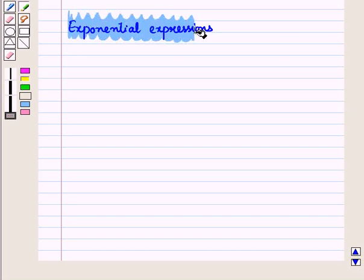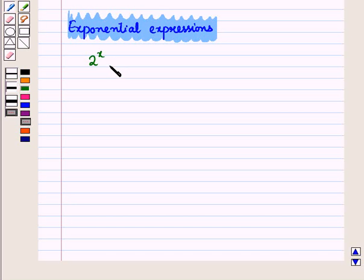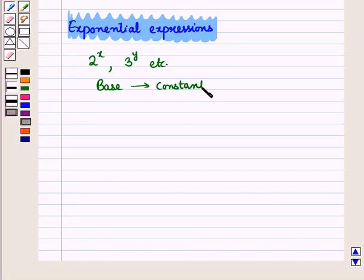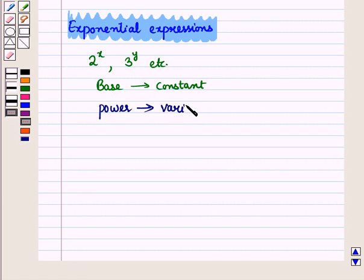Now I will introduce exponential expressions. Expressions of the form 2 raised to power x, 3 raised to power y, etc. are called exponential expressions. Here you can see that the base is a constant and the power or exponent is a variable. Such expressions where the variable occurs in the exponent are called exponential expressions.